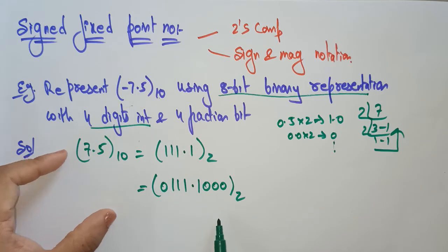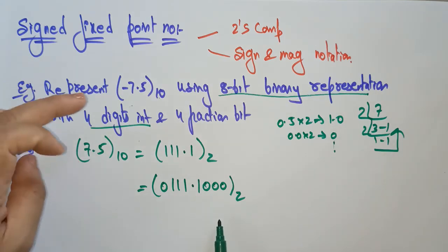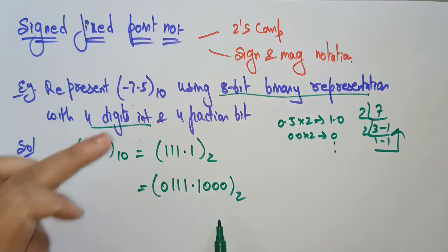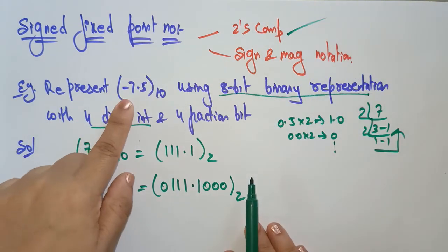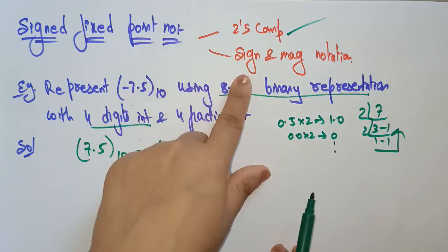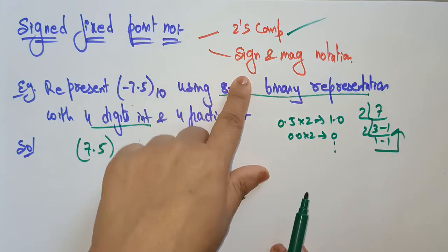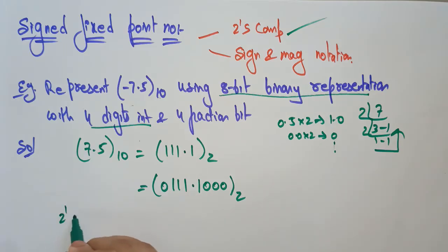This is only for the positive number. Now let's handle the negative sign. You have to find the two's complement because this is a negative number. Whenever a negative number is given, you can follow the sign and magnitude notation or two's complement notation. I recommend always following two's complement.